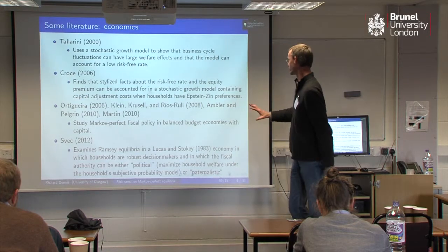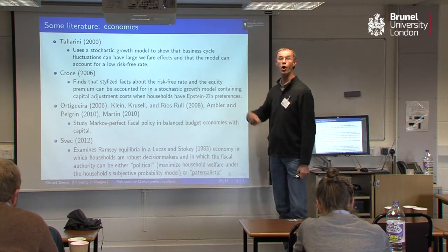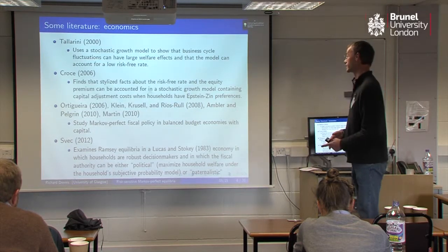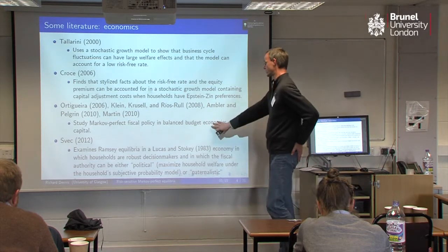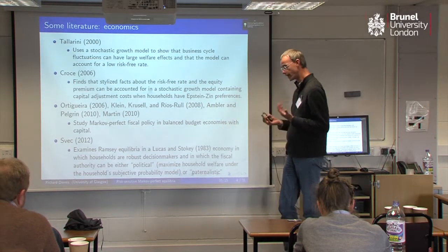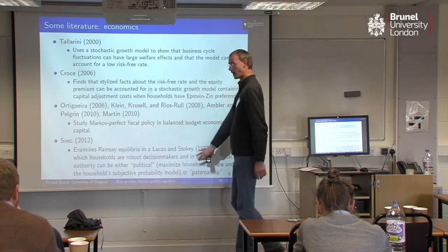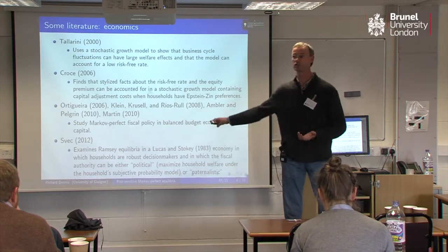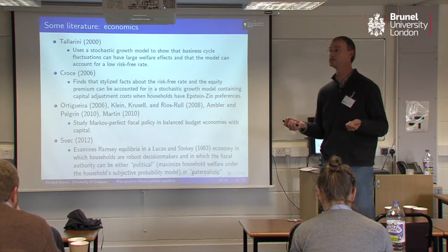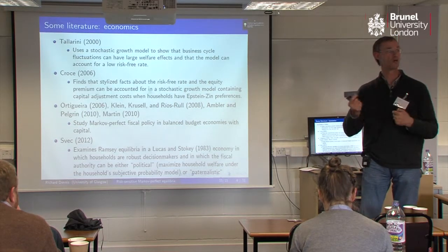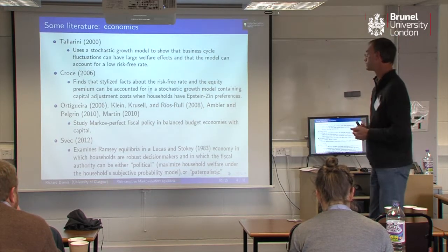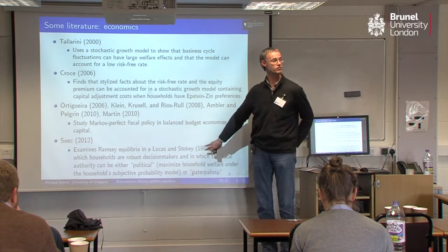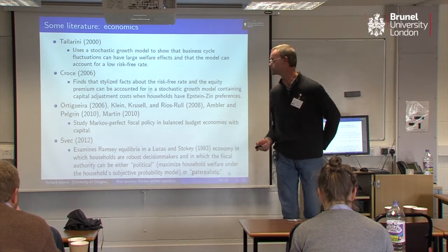This paper that I'm working on is also related to the literature on optimal fiscal policy, or Markov perfect fiscal policy, in dynamic stochastic general equilibrium models, particularly those with balanced budgets. One final paper I should mention is this paper by Justin Svec — this is the first paper that I know of in which you've got two agents within a model that are both risk-sensitive decision makers. I've got that also. Svec looks at a Ramsey type problem whereas I'm looking at a Markov perfect problem, but there's obviously a connection.